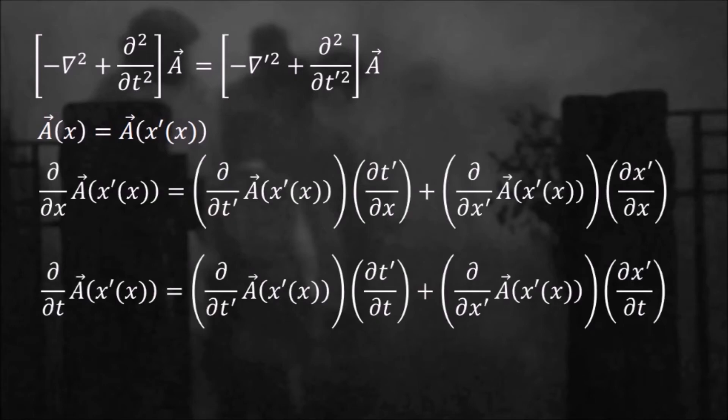Now we want to apply the Lorentz operator to the four vector potential and show that the whole expression is identical to the one in the moving frame. Let's recall how to do this. First we express the vector coordinates in terms of the primed coordinates and then apply the chain rule to write the derivatives in terms of the primed coordinates.